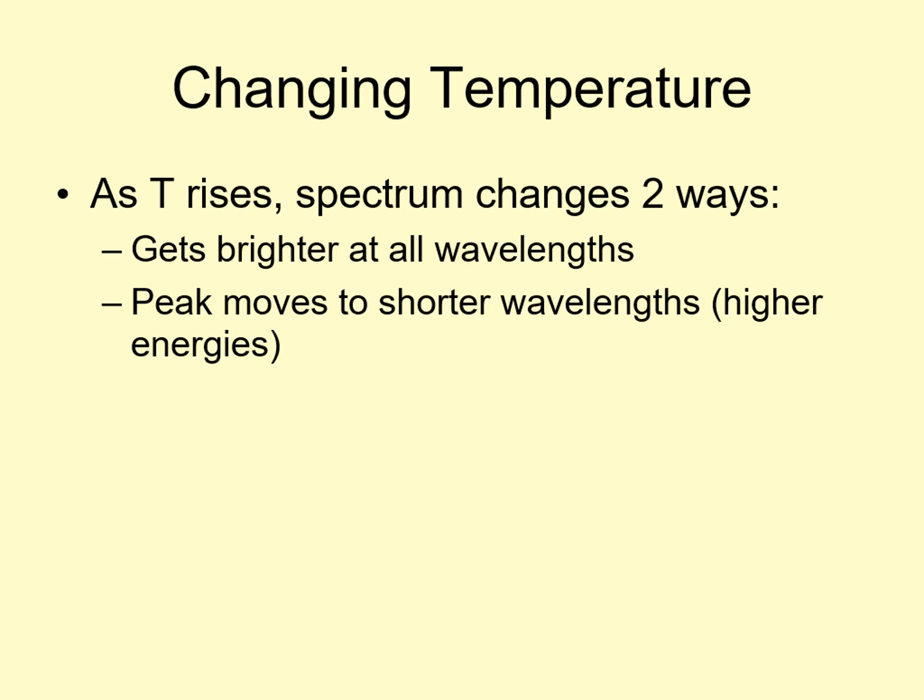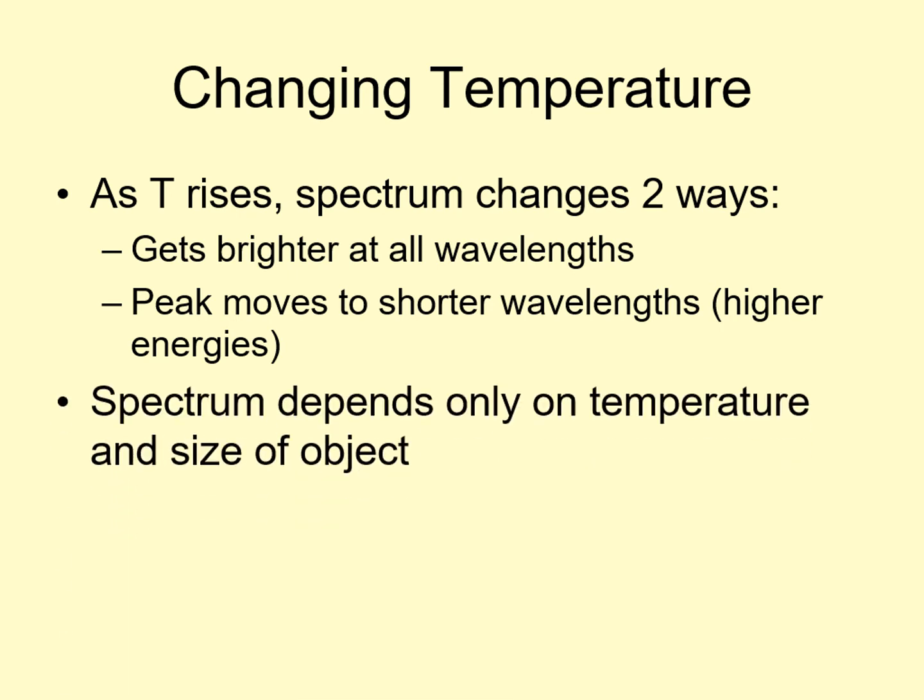Also, there are only two things that affect the spectrum produced: the temperature and the size of the object. We've talked about what temperature does. Changing the size just changes how much surface area it has to glow. So a bigger object will be brighter than a smaller one, but the colors produced are the same.